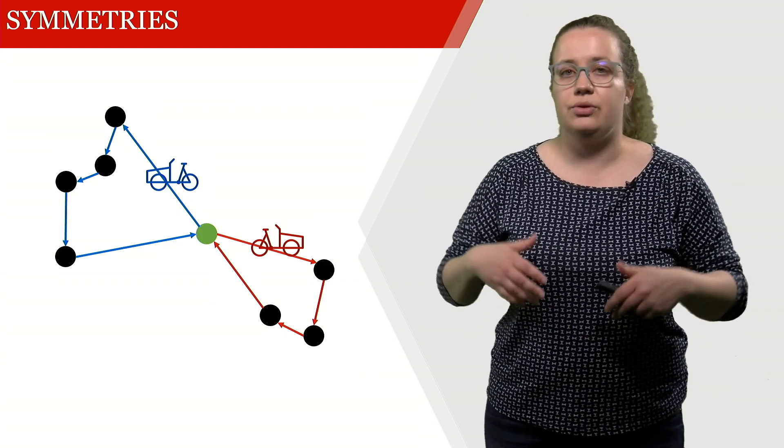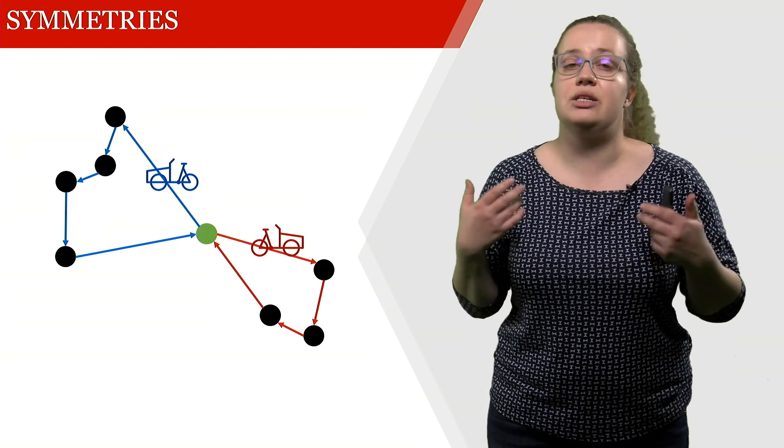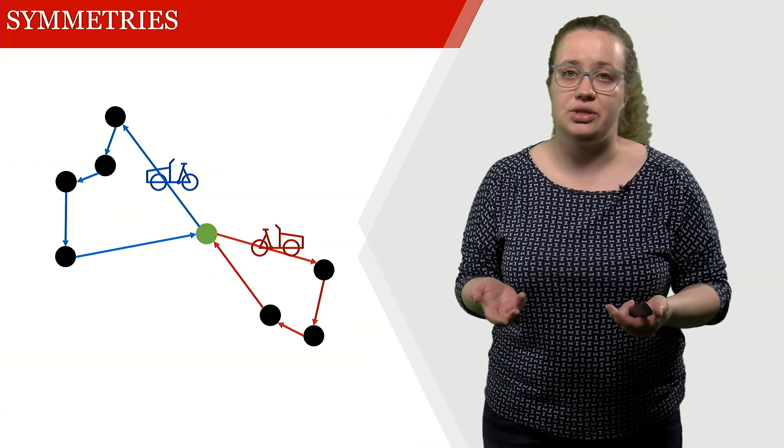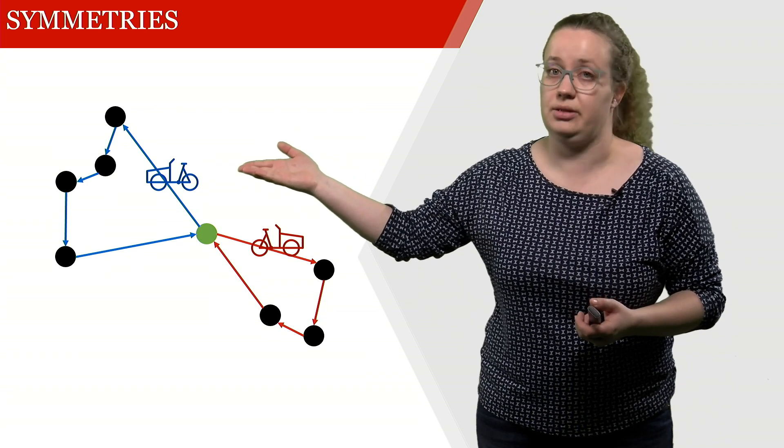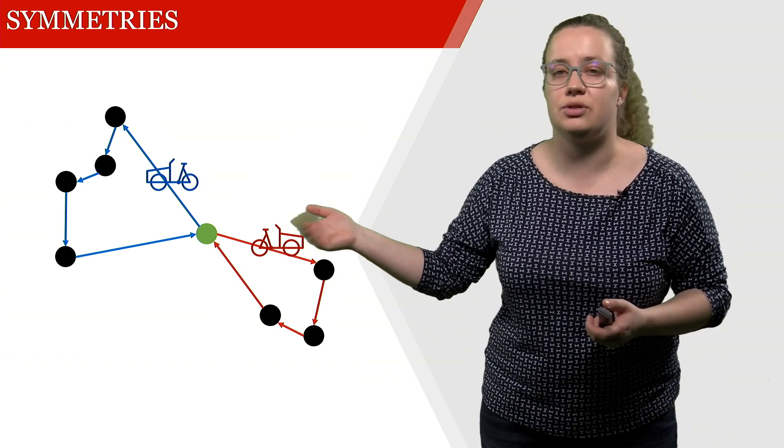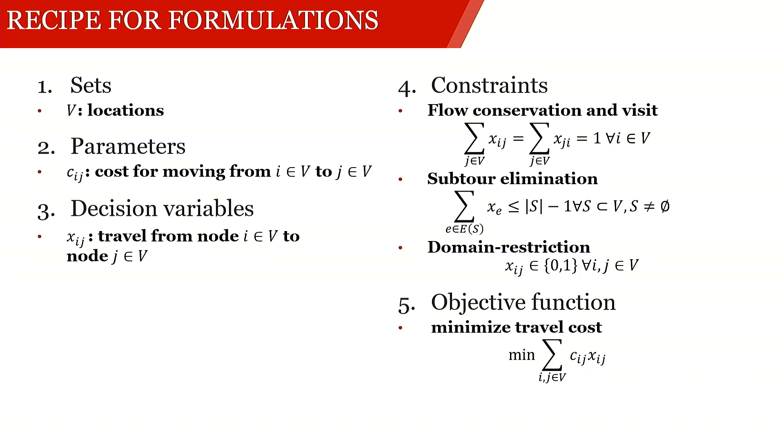What we're going to circumvent is those so-called symmetries that I talked about in the beginning. So the fact that it doesn't make a difference if the blue truck serves this route up here, or the red truck serves this route, and we could just easily switch them.